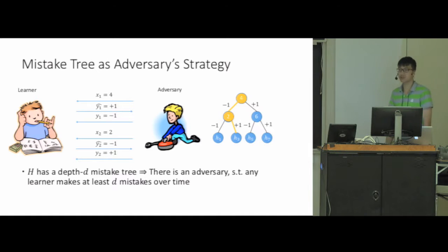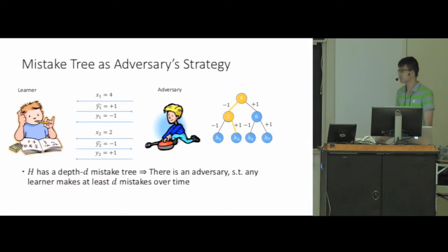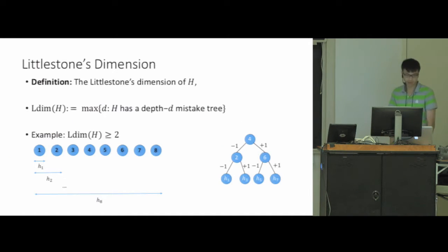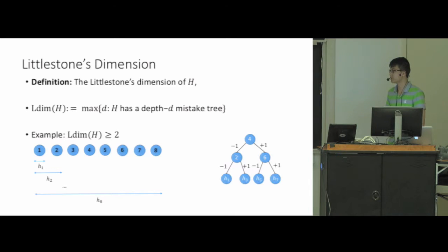In general, if a hypothesis class has a depth-d mistake tree, then there is a strategy for the adversary such that any learner makes at least d mistakes over time. This inspires the notion called Littlestone's dimension, which measures the complexity of this learning problem. It is defined as the maximum depth of a mistake tree within the hypothesis class.